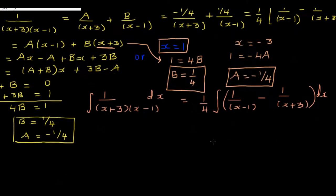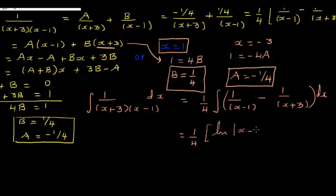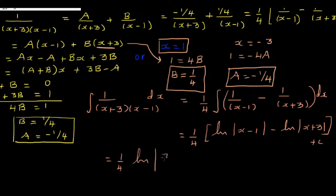This integrates to 1/4 times the natural log of x minus 1 minus the natural log of x plus 3. Using the logarithm subtraction rule, this simplifies to 1/4 times the natural log of (x minus 1) over (x plus 3) plus C.